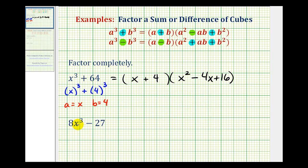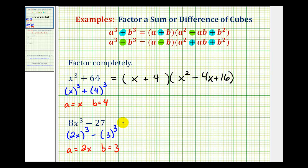Looking at the second example, we have eight x cubed minus 27. The first thing to recognize is that we have a difference of perfect cubes. Eight x cubed is a perfect cube because we can write it as two x to the third, and 27 is a perfect cube because we can write it as three to the third. So in this form, a must equal two x and b must equal three. The binomial factor for a difference of cubes is a minus b, so here we'll have two x minus three.